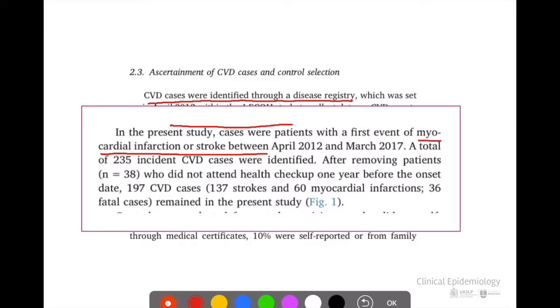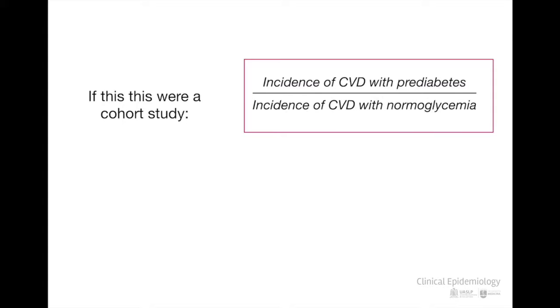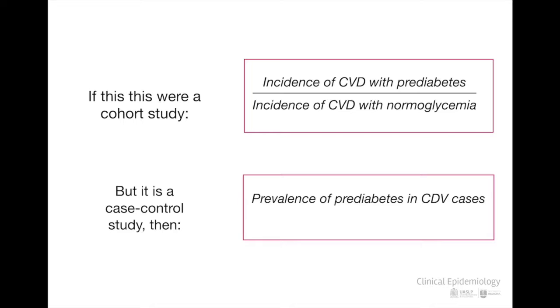It is important to note that there are incident cases, that is, people who at the beginning of the cohort had no signs of cardiovascular disease. Thus, from a cohort of over 100,000 people, 197 new cases of cardiovascular disease, 137 of stroke and 60 myocardial infarctions appear. This is one of the reasons to design a case-control study nested in a cohort. The incidence of new cases is expected to be very small in a short period of time. If reported as a cohort study, the incidence of cardiovascular disease in people with persistent prediabetes against persistent normoglycemia will be compared. But since it is a case-control study, the prevalence of persistent prediabetes is reported in cases with cardiovascular disease against those without cardiovascular disease. Hence, the importance of selecting the controls.